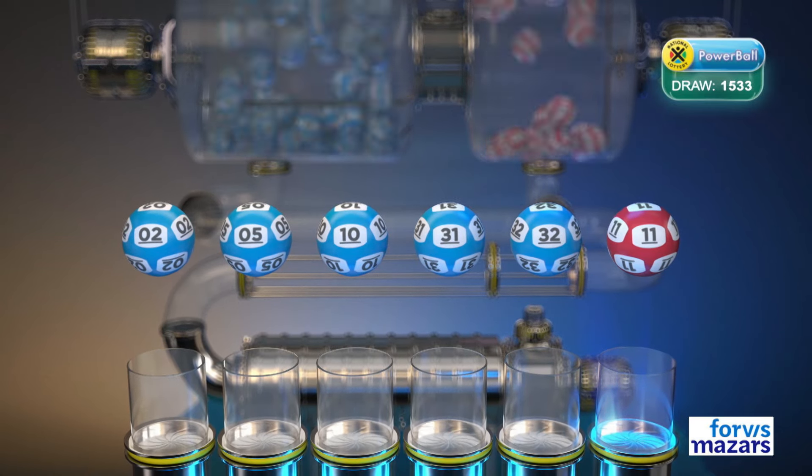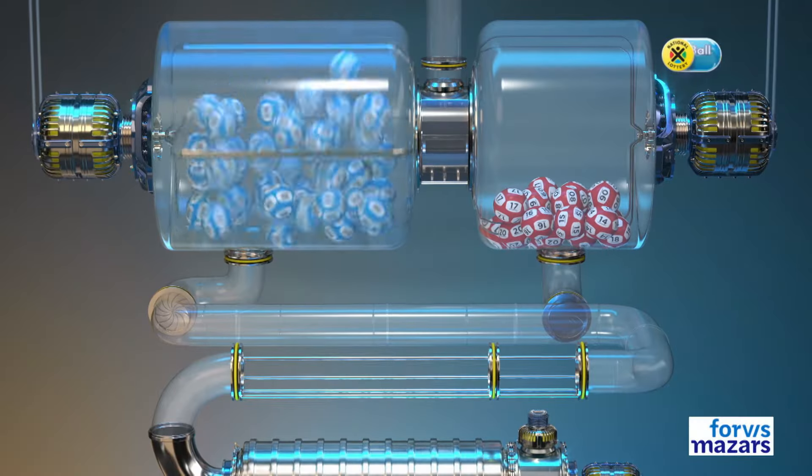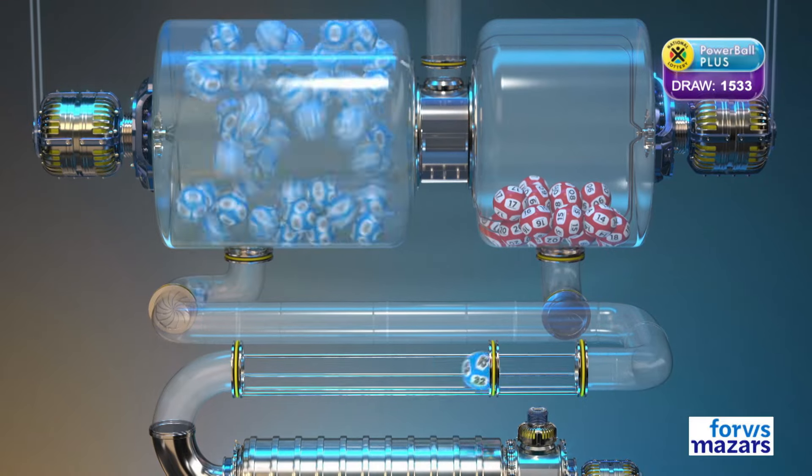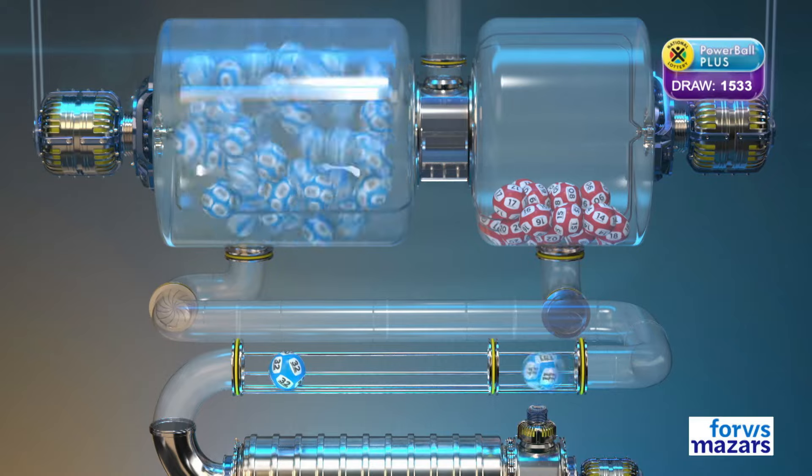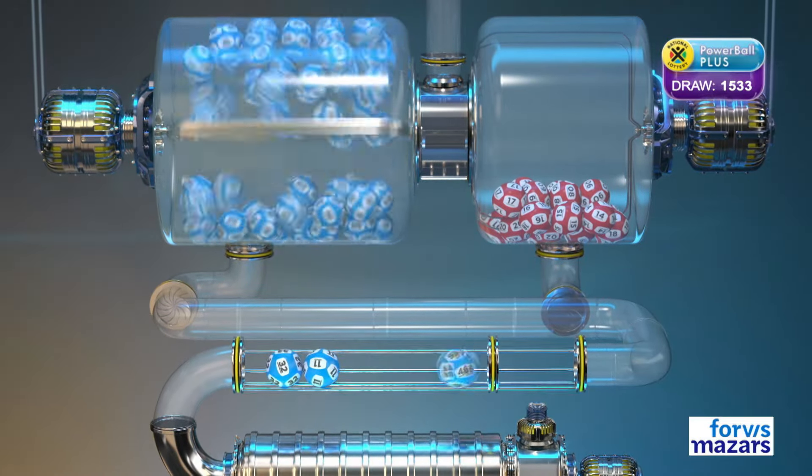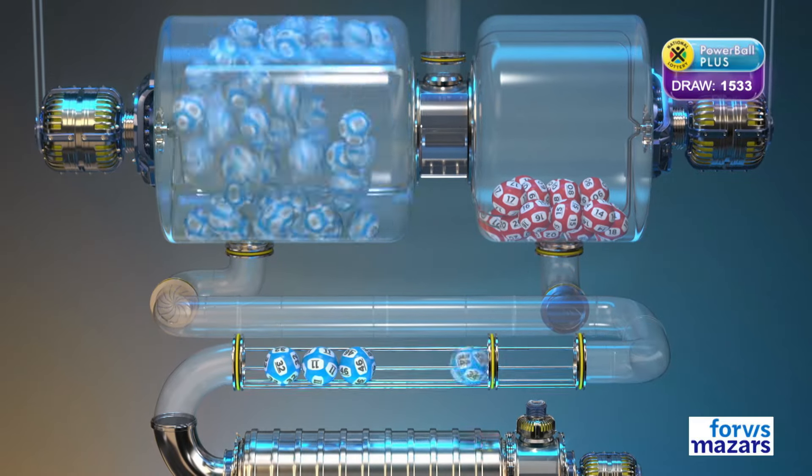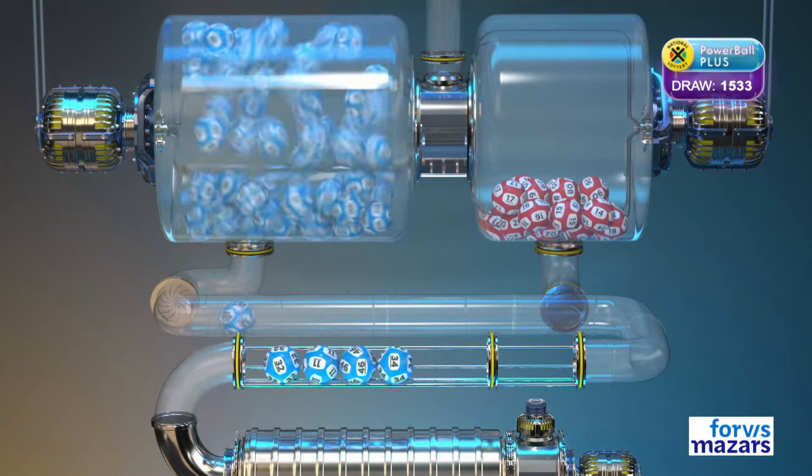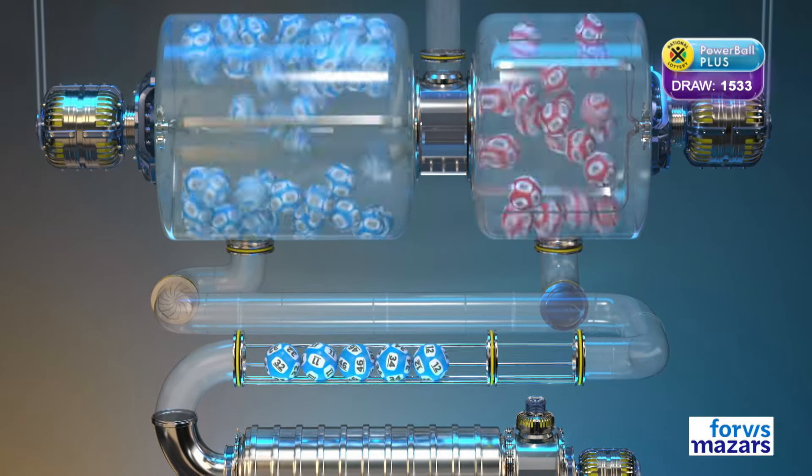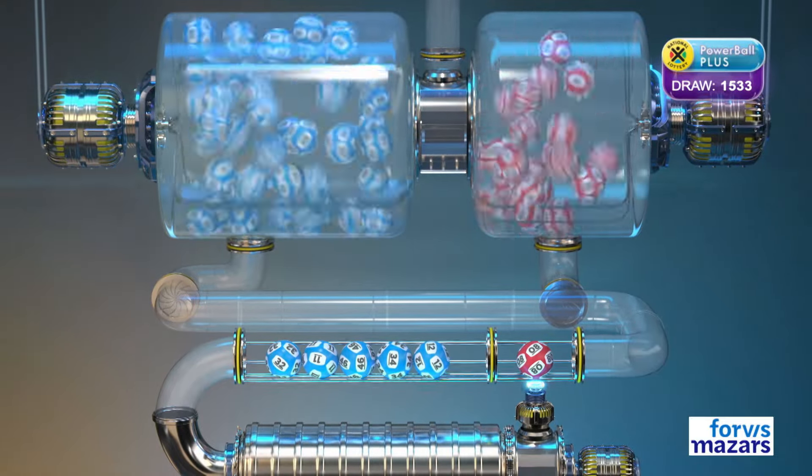The Powerball Plus numbers are: thirty-two, eleven, forty-six, thirty-four, twelve, and the Powerball is eight.